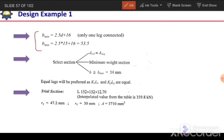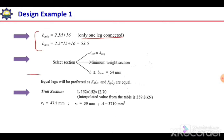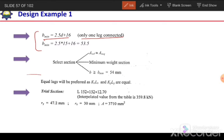B_minimum is calculated as 2.5d + 16 when one leg is connected. The problem states the member is connected through the longer leg, meaning only one leg is connected. Using this expression with an assumed bolt diameter of 15 mm, B_minimum comes out to be 53.5 mm. So at this stage we have three pieces of information: area required, B > 53.5 mm, and kxLx = kyLy.